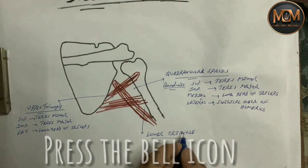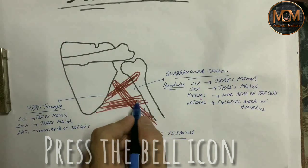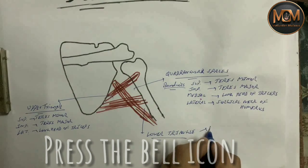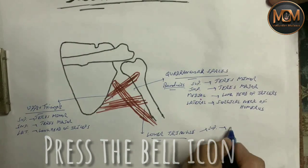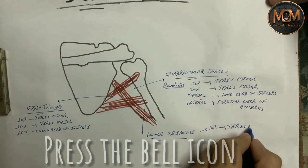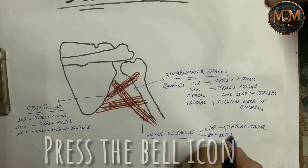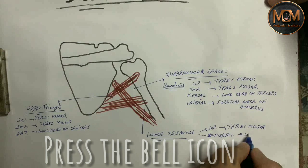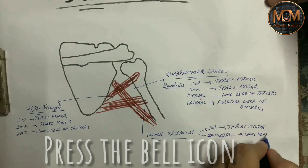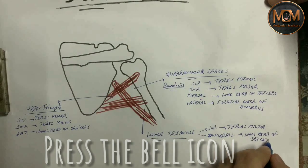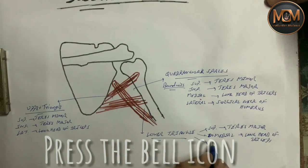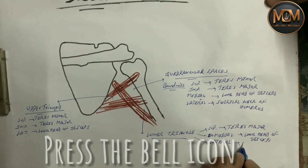Now for the lower triangle: it has superior, medial, and lateral boundaries. Superiorly is teres major, medially is the long head of triceps, and laterally is the shaft of humerus.